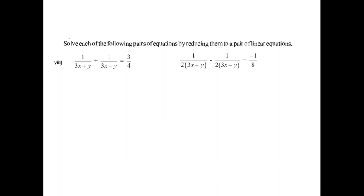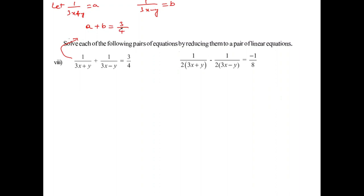The next sum is tricky. I assume 1 by 3x plus y equals A and 1 by 3x minus y equals B. The first equation reduces to A plus B equals 3 by 4. Multiplying through, this becomes 4A plus 4B equals 3 (equation 1).